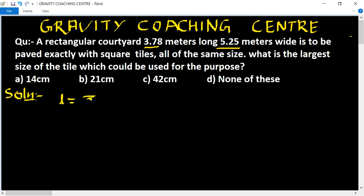Length is 3.78 meters, breadth is 5.25 meters. We need to change it to centimeters. We have to multiply by 100. So 3.78 meters will be 378 cm. 5.25 meters will be 525 cm.